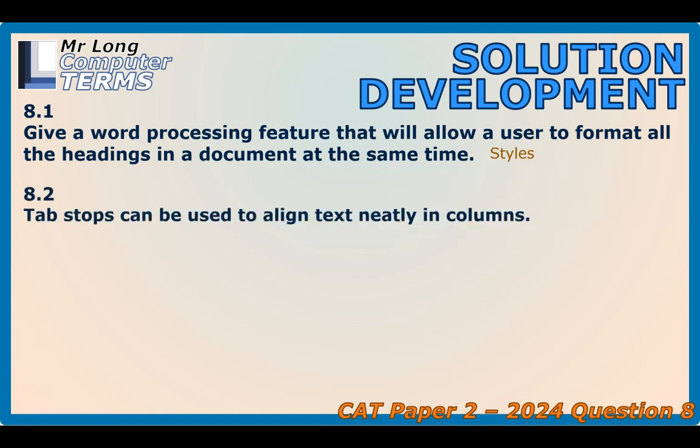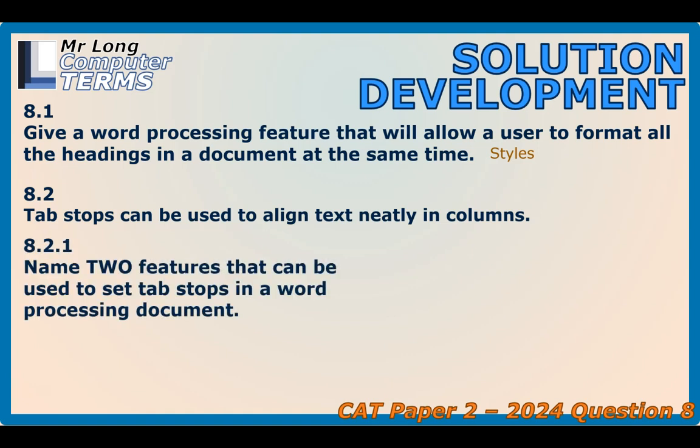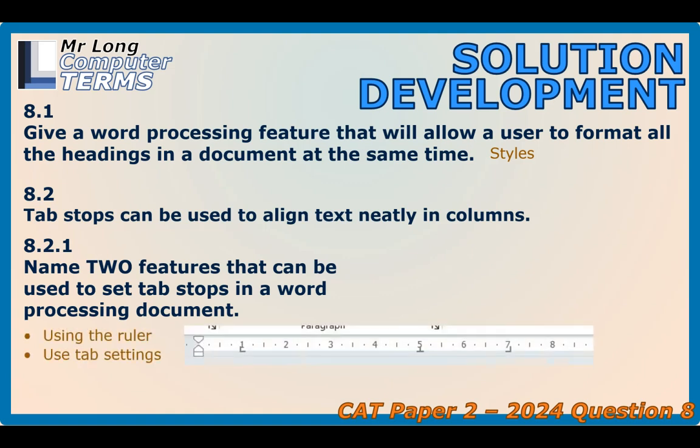Another feature in word processors is tab stops, which can be used to align text neatly in columns. Name two features that can be used to set tab stops in a word processing document. You can do it two ways: you can go to the ruler of the document and click on it to set particular tabs, or you can go to the tab settings. Either one will allow you to add tab stops, and there you can see an example of the ruler with some tabs attached.